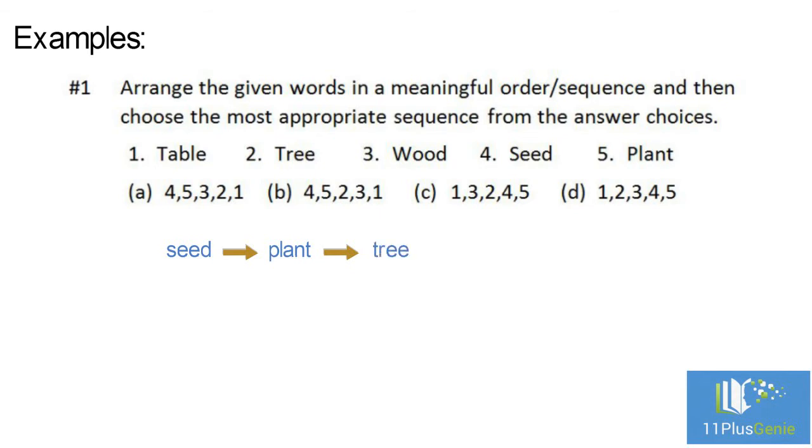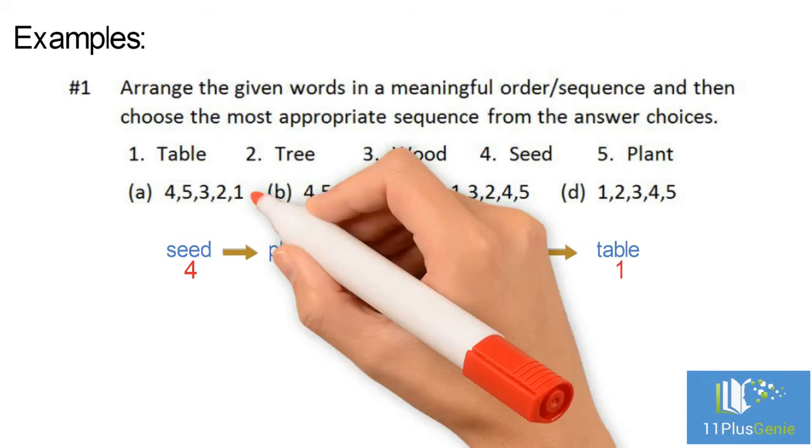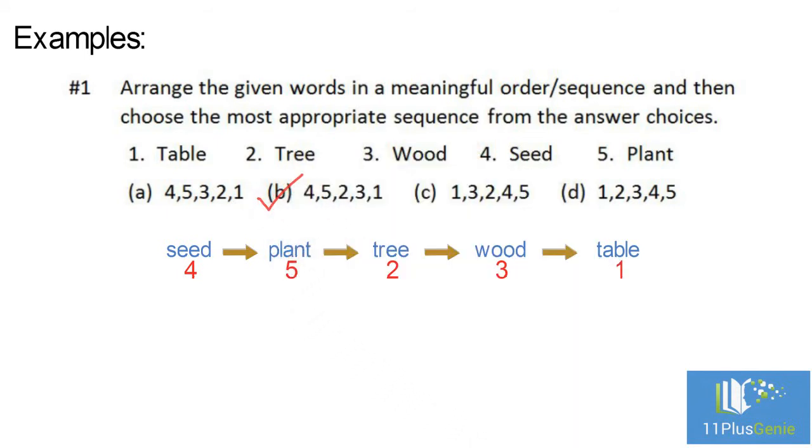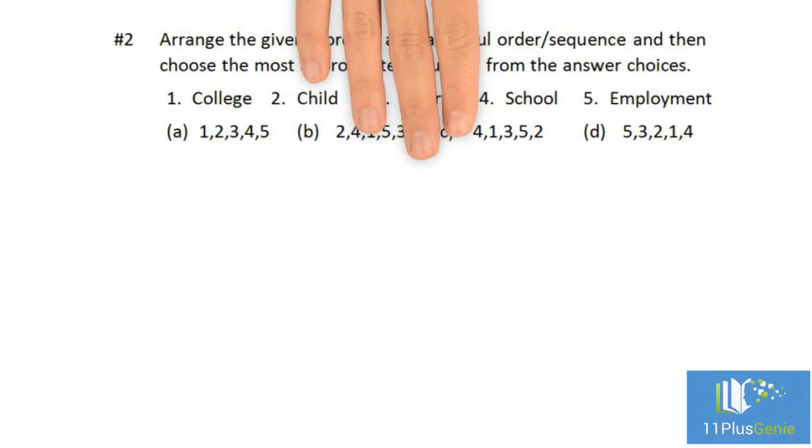We must first sow the seed, which grows into a plant. The plant grows into a tree, and we use the wood from the tree to make a table. The correct order is: seed, plant, tree, wood, table. The correct answer is 4, 5, 2, 3, 1, which is B.